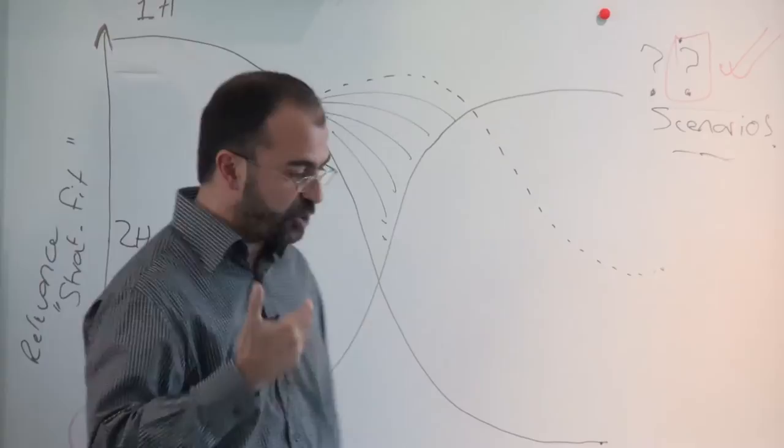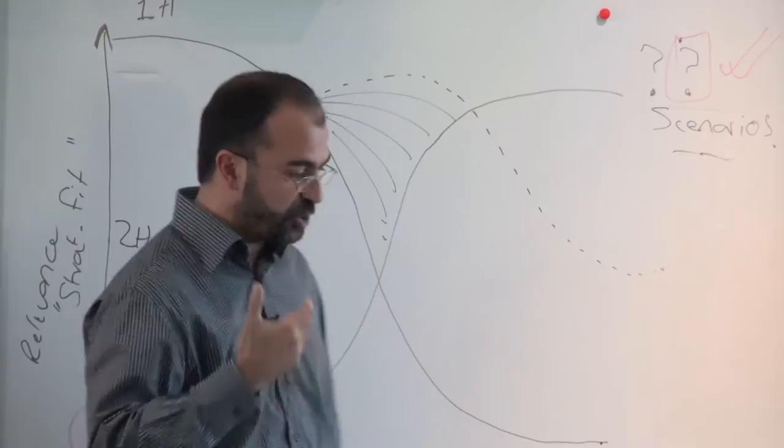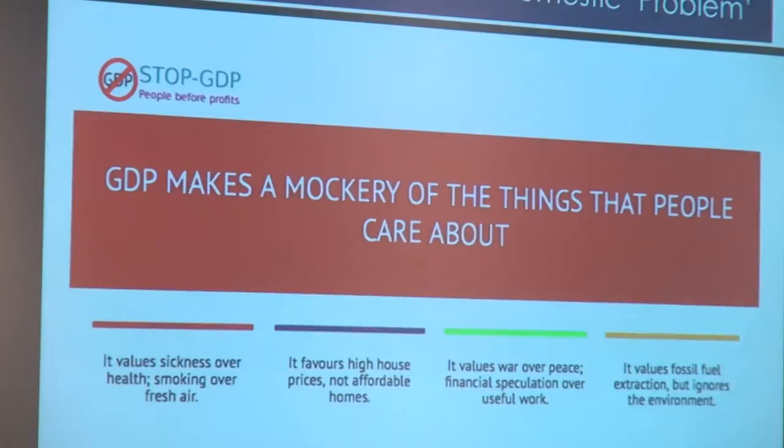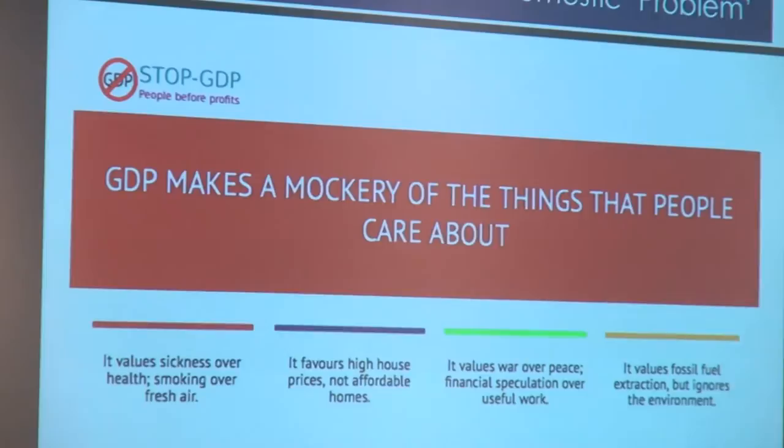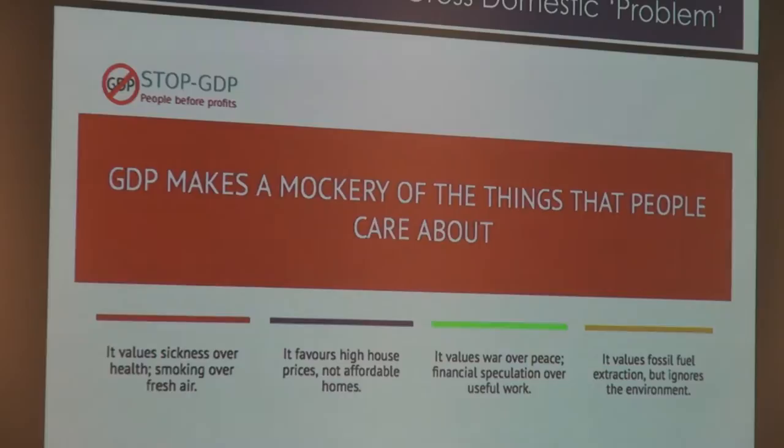We're trying to change things in a more fundamental way. For instance, one thing we've done is to start a global Stop GDP campaign, explaining to people why GDP is so fundamentally dangerous, why it is the ultimate cause of a lot of problems we see in today's societies. It doesn't value things properly. It values sickness over health, smoking over fresh air, it favors high house prices not affordable homes.